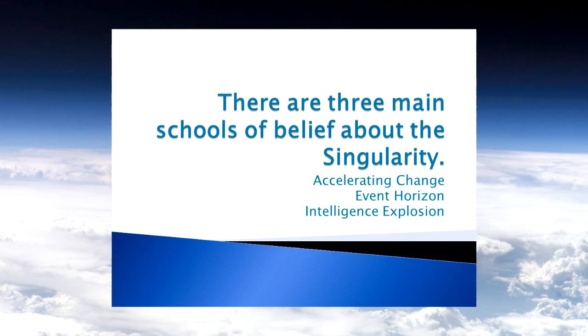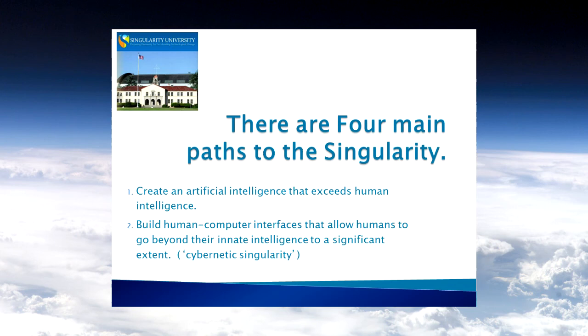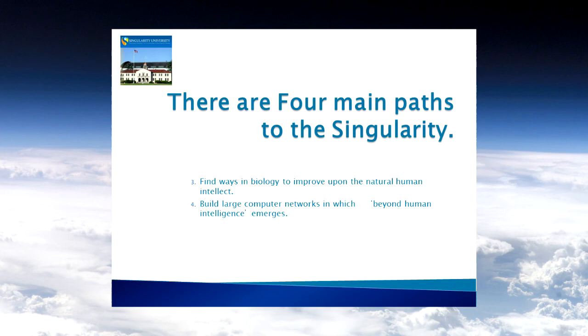The three main schools of belief about the technological singularity are: accelerating change, event horizon, and intelligence explosion. There are four main paths. One is creating an artificial intelligence that exceeds human intelligence. Another is creating a human-computer interface — a cyborgian entity that allows humans to go beyond their innate intelligence, the so-called cybernetic singularity. Third is finding biological ways to improve upon the natural human intellect, which is likely the slowest of the four and therefore least likely to happen first.